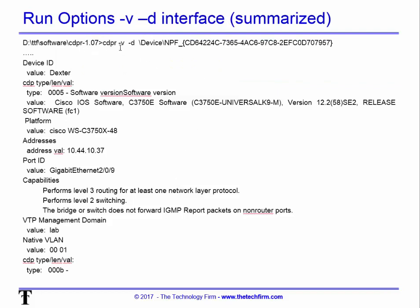The last option is '-V' for verbose, which provides the same level of detail we saw in Wireshark. It tells you the platform — in this case a 3750 48-port switch — the IP address, the port, capabilities such as layer three routing and layer two switching support, VTP management information, and the VLAN.